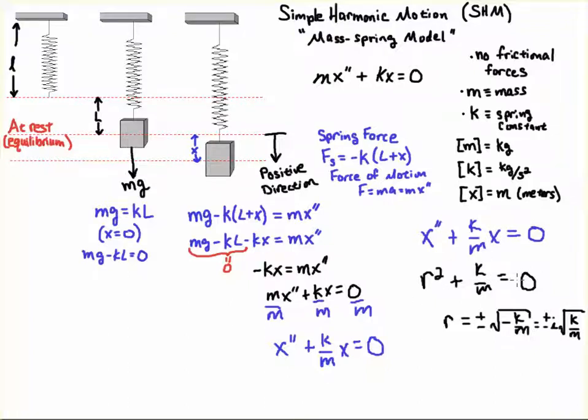I subtract k over m from each side, so I get minus k over m, then I take the square root. And remember, because this is an r squared term, we're going to get a plus or minus, because the square is ambiguous. And this negative sign gives us a square root of negative 1, so that becomes i.